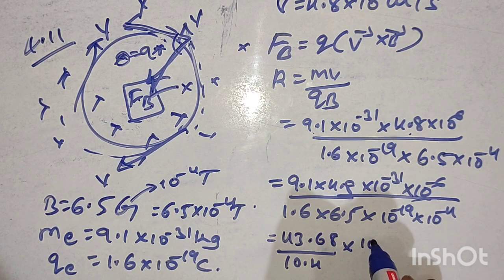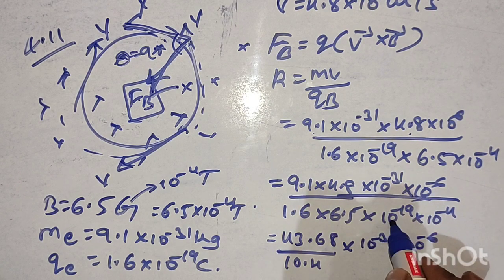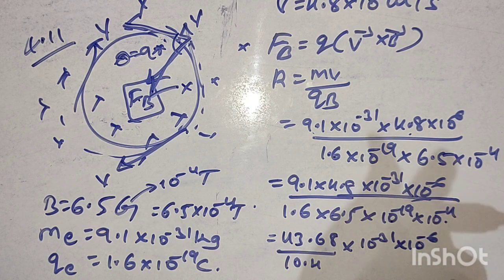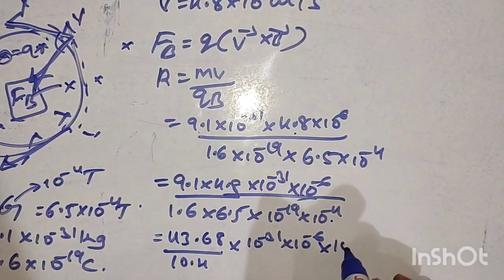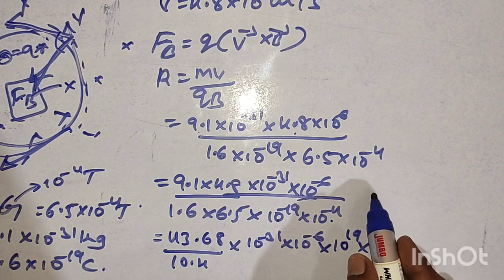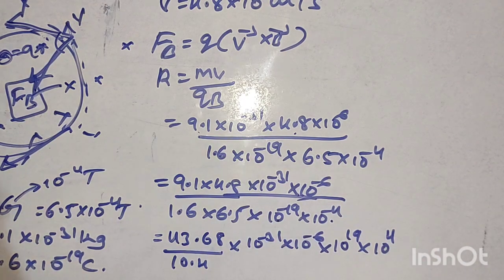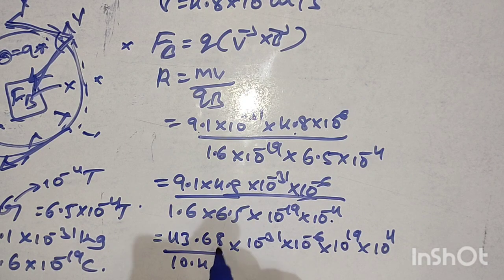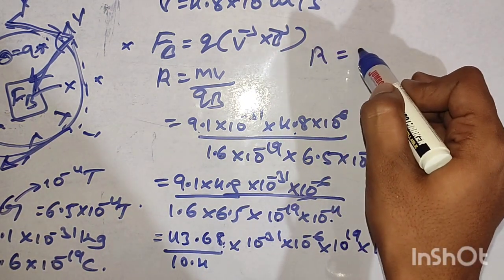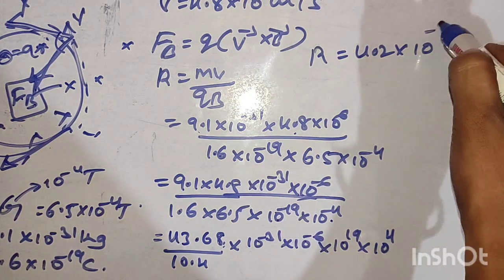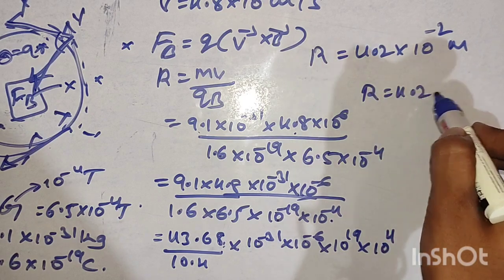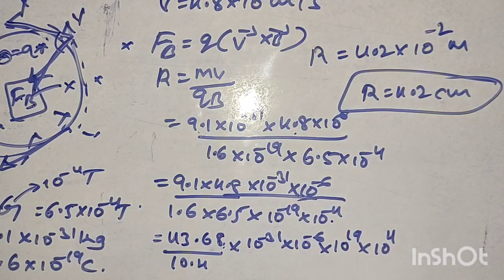10 to the power of minus 31 into 10 to the power of minus 6. The denominator values 10 to the power of minus 19 and 10 to the power of minus 4 are shifted into the numerator, becoming plus 19 and plus 4 respectively. So R equals 43.68 divided by 10.4, into 10 to the power of minus 2 meter. R equals 4.2 cm, and this is the answer.